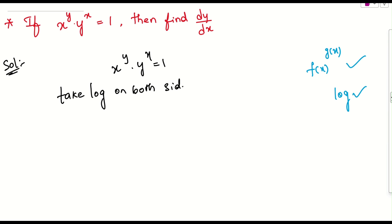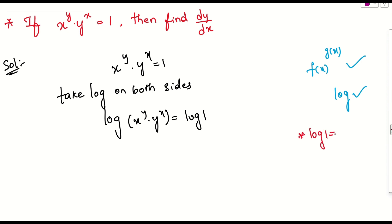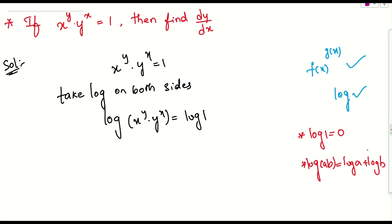If I take log on both sides, this is nothing but log of x power y times y power x equals log 1. Keep in mind that log 1 equals 0. We also have the formula log(ab) equals log a plus log b — let me write it down. So that is the formula I will be applying here.